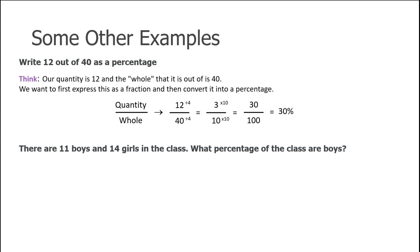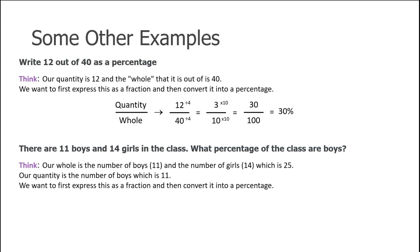There are 11 boys and 14 girls in the class. What percentage of the class are boys? There's one more step here — first we need to think about the total number. The whole class is 11 boys and 14 girls, which gives us a value of 25. Our quantity is the number of boys, which is 11. So let's express this as a fraction first: quantity over whole gives us 11 over 25. To get a denominator of 100, we multiply by 4, giving us 44 over 100, which is 44%.